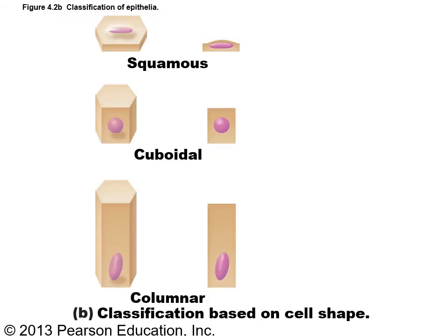Here is a look at the three different shapes. In squamous cells the nucleus appears flat. In cuboidal cells the nucleus is perfectly round. In columnar cells the nucleus is kind of elongated.